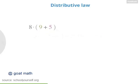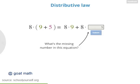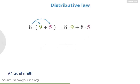Next, try using the distributive law on this expression: 8 times (9 plus 5), where 9 plus 5 is in parentheses. Remember that this dot is another way to write the multiplication symbol. This expression is equal to 8 times 9 plus 8 times another number — what's this missing number? Distributing 8 into 9 plus 5 gives us 8 times 9 plus 8 times 5.